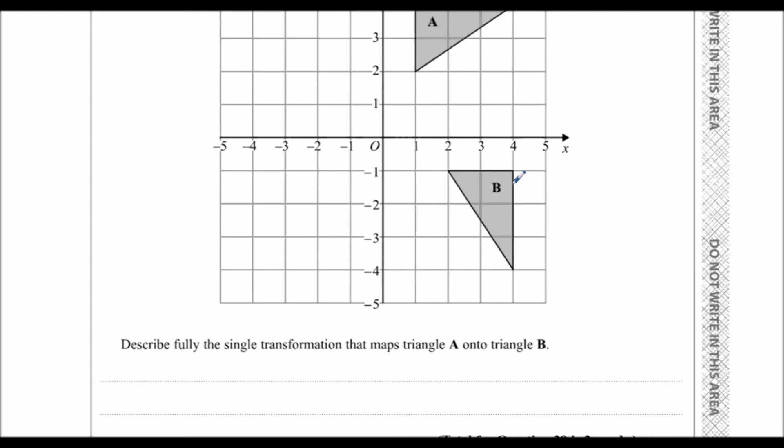We can have an enlargement, that's when a shape gets bigger or smaller - it's not that. We could have a reflection, that's where we've got a mirror line - it's not that. We could have a translation, where it's the same shape that's just been moved, and it's not that.